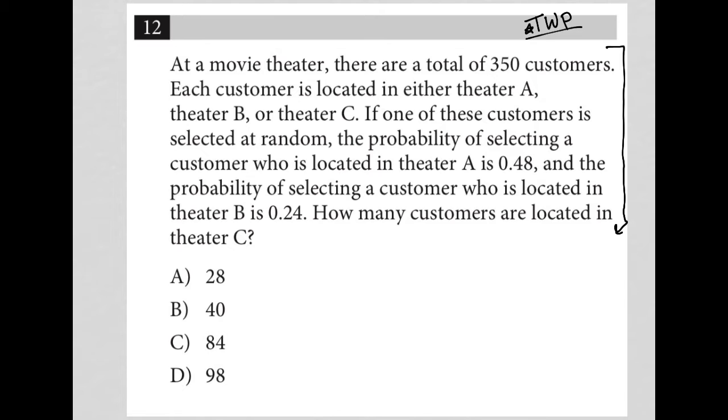So let's look at this first sentence. The first sentence here says at a movie theater, there are a total of 350 customers, right? So I'm going to just write down 350 customers as what I get from the first sentence.